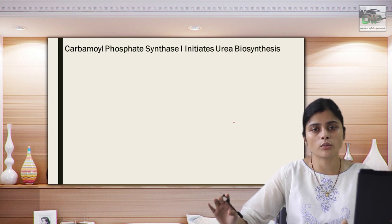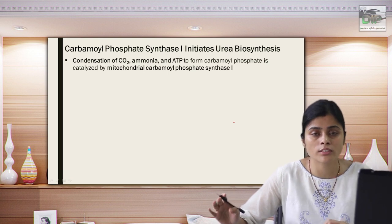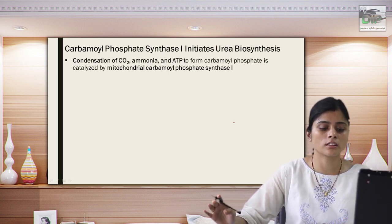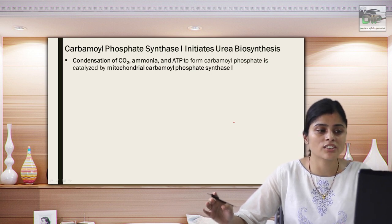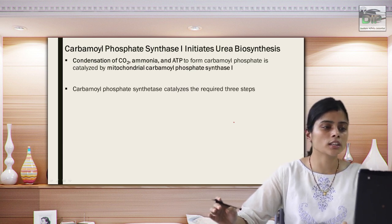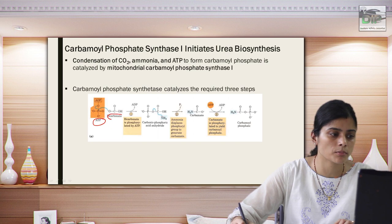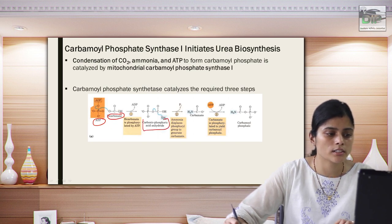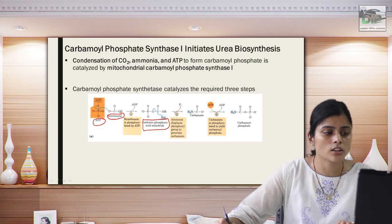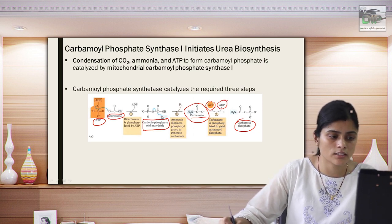The first step of urea biosynthesis is catalyzed by carbamyl phosphate synthase 1 (CPS1), which is also the rate-limiting enzyme — the urea cycle rate can be increased or decreased by inhibiting or activating this enzyme. CO2, ammonia, and ATP undergo a series of chemical transformations: bicarbonate plus ATP forms an intermediate carbonic-phosphoric acid anhydride, which undergoes structural changes forming carbamate, and ultimately gives carbamyl phosphate with the help of another ATP. Two ATPs are required, making this an energy-requiring process.